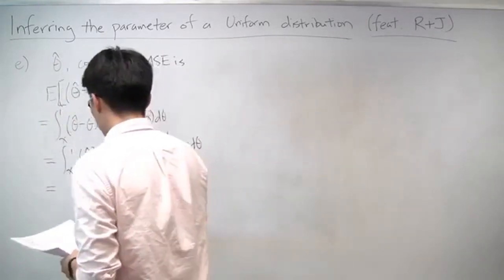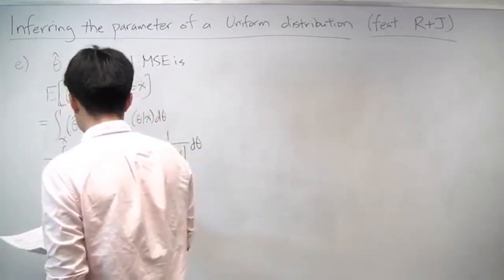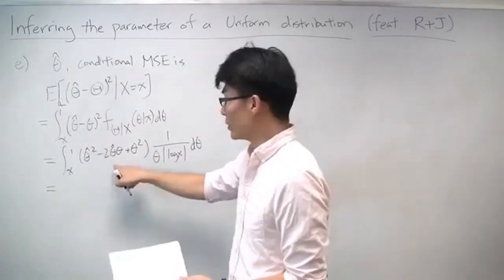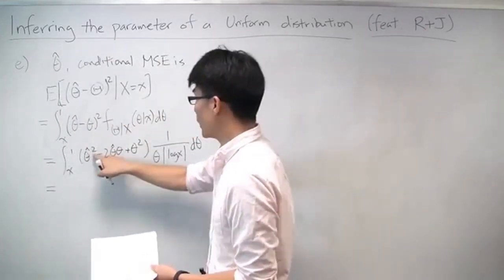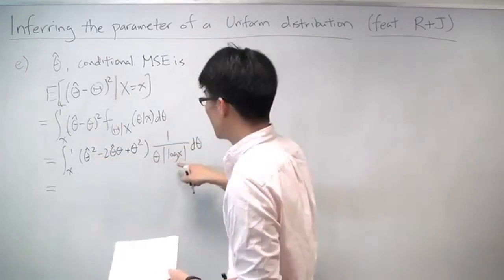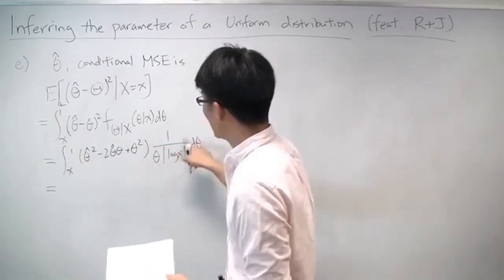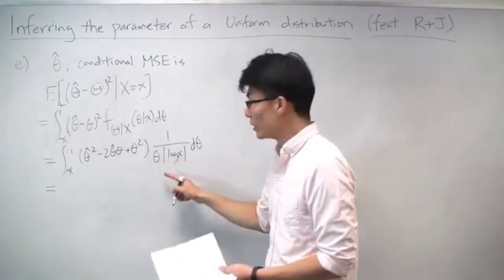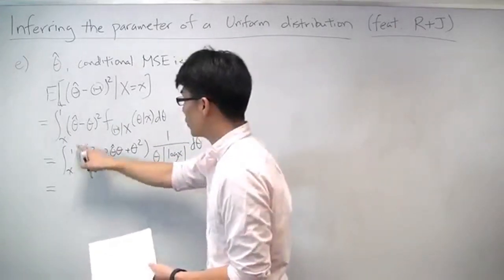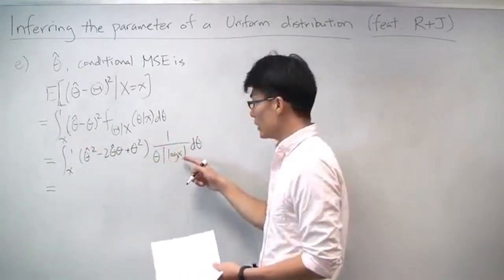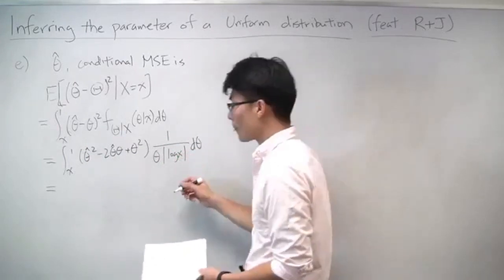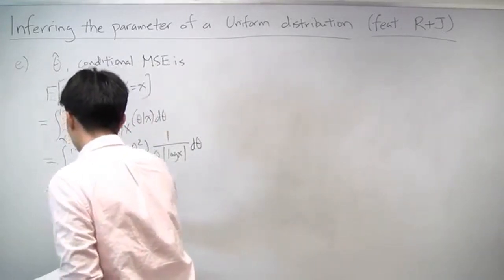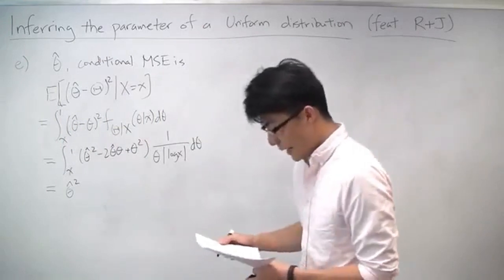The posterior we know from before is 1 over theta times the absolute value of log x. When we do out this integral, we can split it up into three different terms. There's theta-hat squared times this, and you integrate it. In fact, this is just a conditional density — when you integrate from x to 1, this will integrate up to 1 because it is a valid density. So the first term is just theta-hat squared.